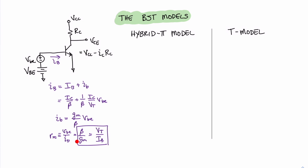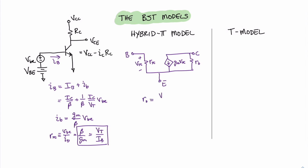With R pi as our input resistance derived from the base current, we can now draw the hybrid pi model. Starting at the base, we have resistance R pi. Then from collector to emitter, we have a voltage-controlled current source with value GM times V pi, the voltage across the input resistor. We also have an output resistance RO, similar to the MOSFET case, due to the slope in the saturation curve and an early voltage. RO equals the early voltage V sub A divided by collector current capital I sub C. That concludes our hybrid pi model development.